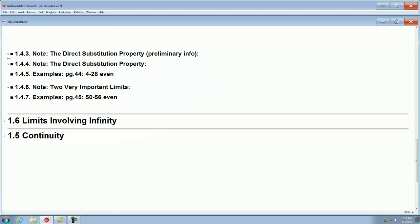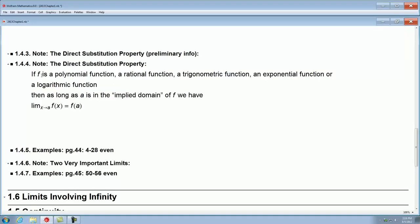Now the direct substitution property. It says, if f is a polynomial function, a rational function, a trigonometric function, an exponential function, or a logarithmic function, any of those functions, then as long as a is in the implied domain of the function, the limit of the function as x approaches a is just simply plugging a into the function. So as long as the a that we're approaching lives in the domain of any of these types of functions, the answer is just plugging that value into the function. There's no real work to be done here. But you must make sure that that a is in the domain of the functions.